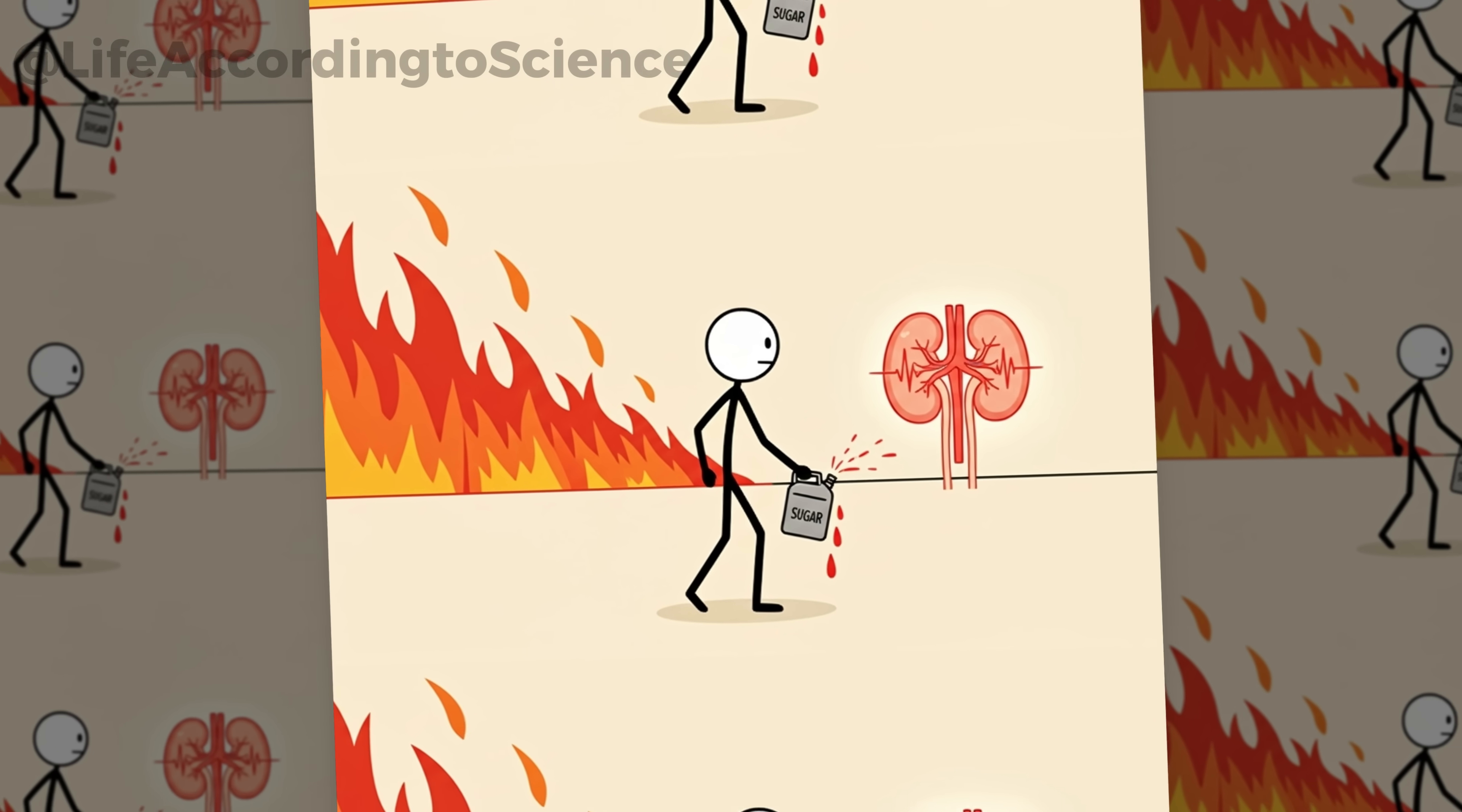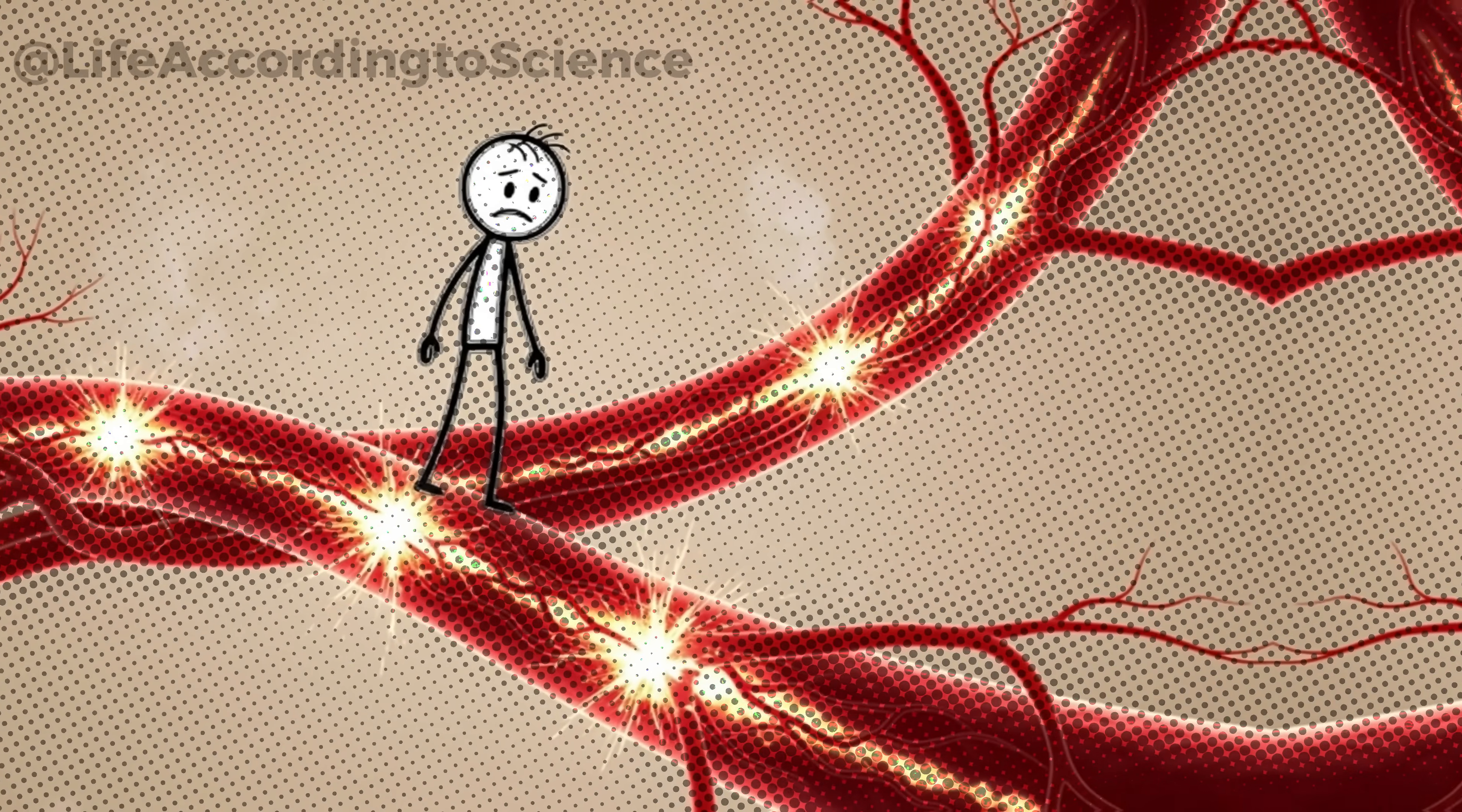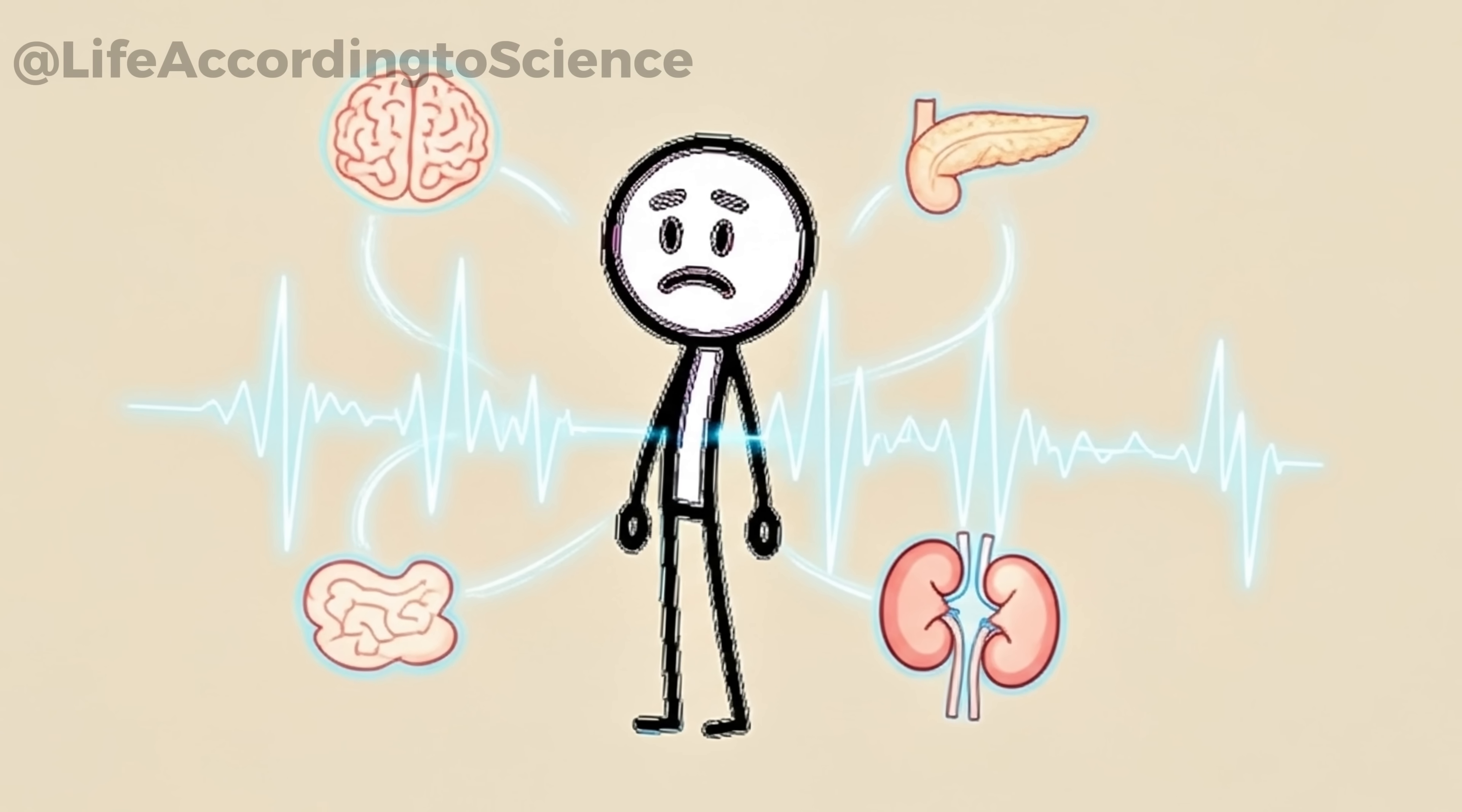If sugar is gasoline, diabetes is the wildfire. One of the leading causes of kidney failure worldwide is uncontrolled diabetes, fueled largely by diets high in added sugars. Constant high blood glucose damages the blood vessels in the kidneys, gradually leading to diabetic nephropathy. When you quit sugar for 30 days, your insulin sensitivity often improves. That means your body needs less insulin to handle glucose, protecting both your pancreas and your kidneys. It's a chain reaction of healing.